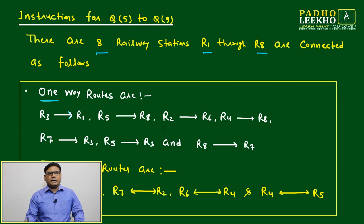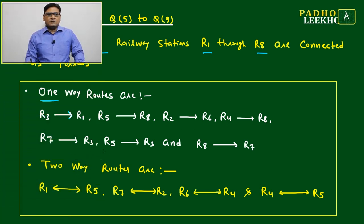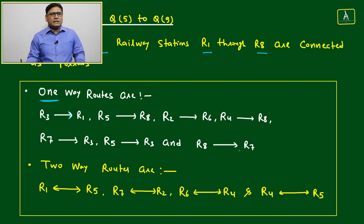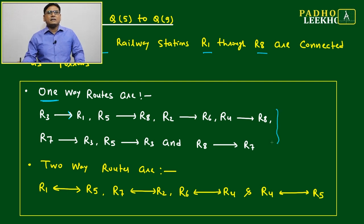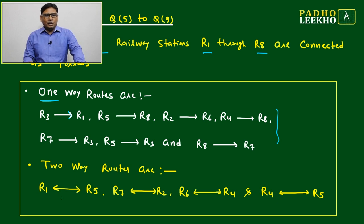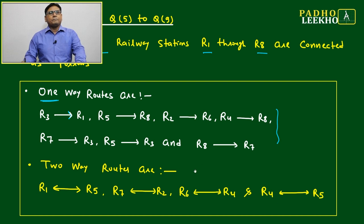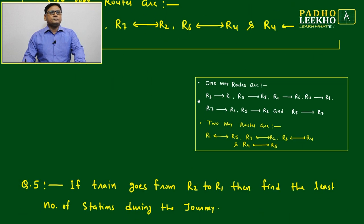The one-way routes are: R5 to R8, R2 to R6, R4 to R8, R7 to R3, R5 to R3, and R8 to R7. Two-way routes — indicated by a double arrow notation — are: R1 to R5, R7 to R2, R6 to R4, and R4 to R5.